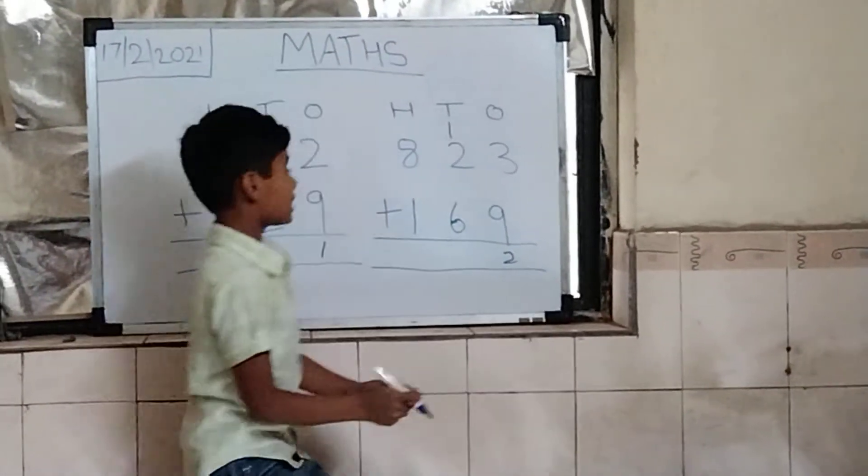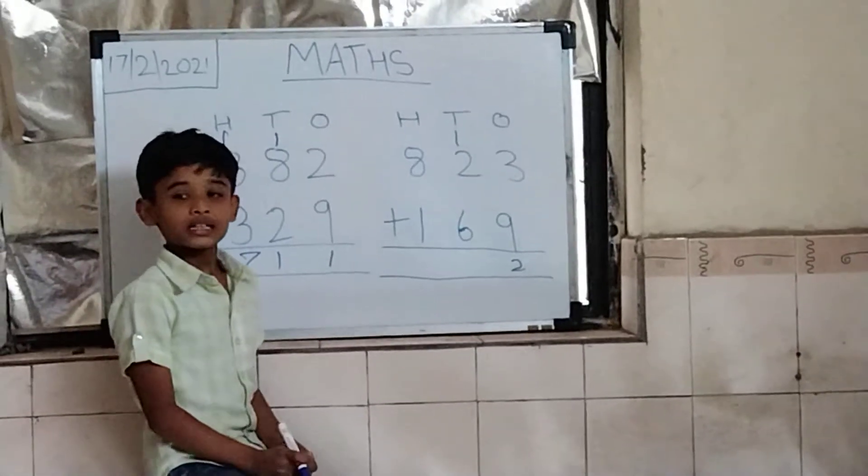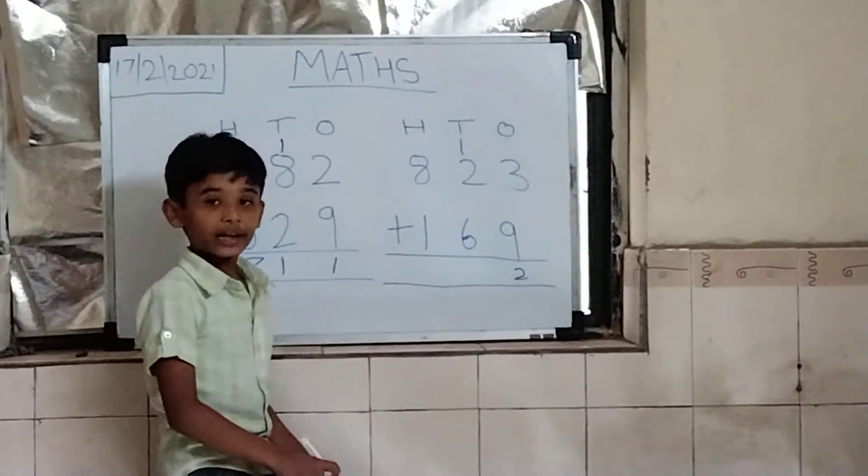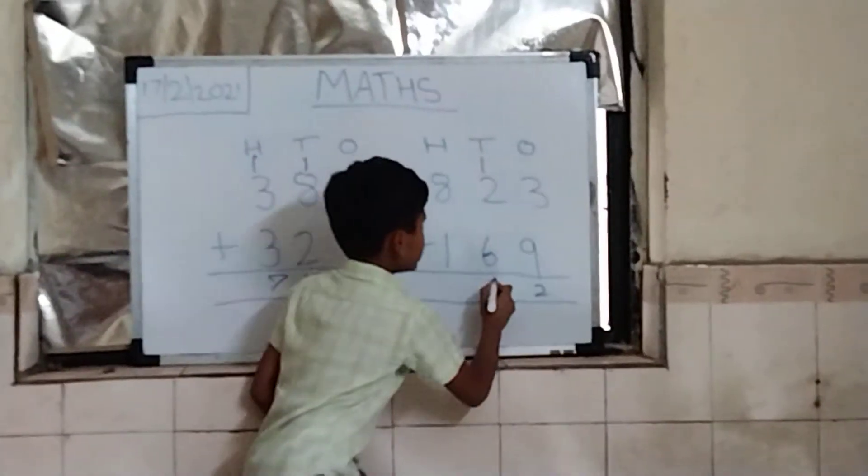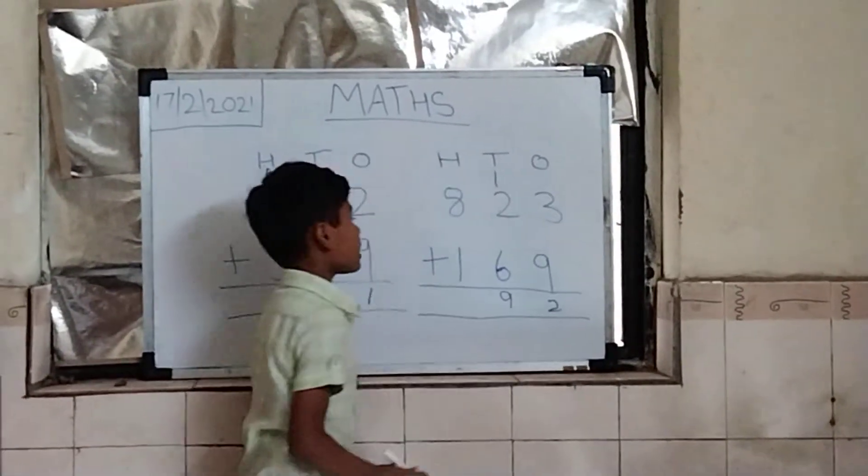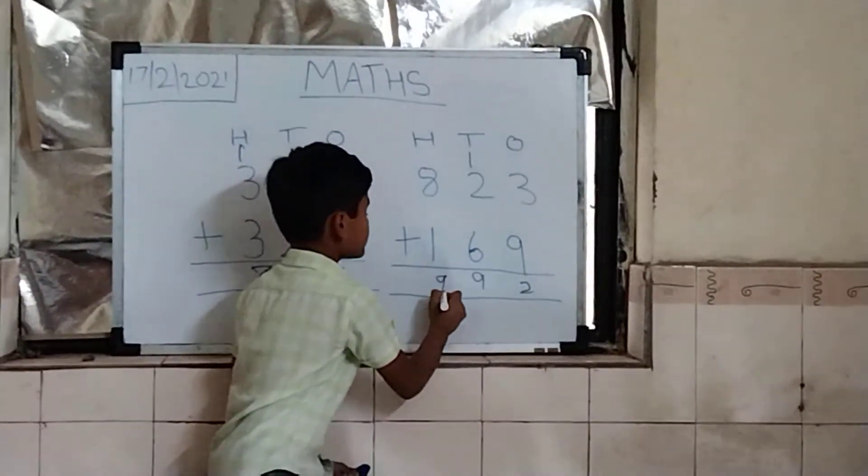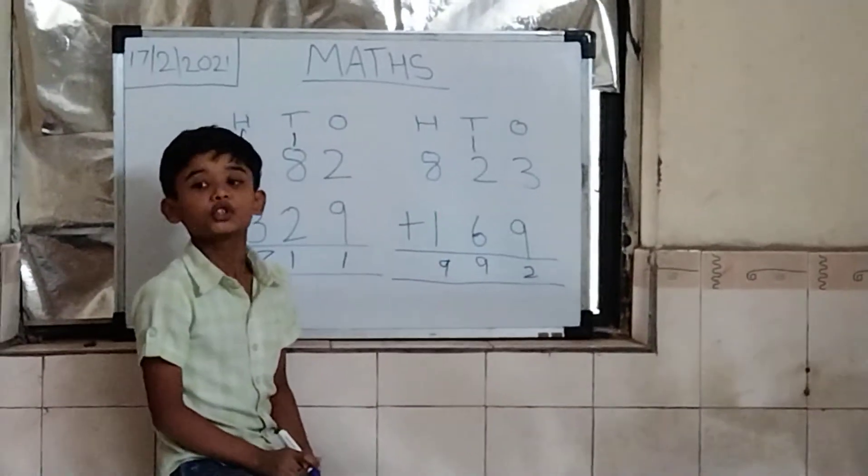2 plus 6 is 8. And 2, 1 plus answer is 9. And 8 plus 1 is 9. Full answer is 992.